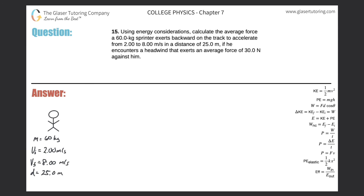Number 15: using energy considerations, calculate the average force a 60-kilogram sprinter exerts backward on the track to accelerate from 2 to 8 meters per second in a distance of 25 meters, if he encounters a headwind that exerts an average force of 30 newtons against him. So first, if we're trying to find the average force from an energy perspective...